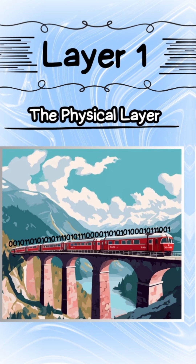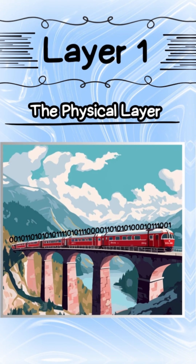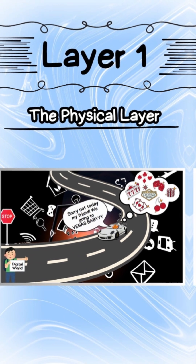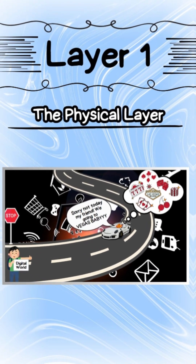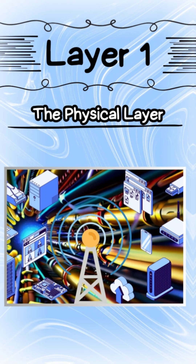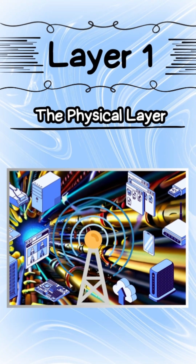Layer 1: The physical layer. Picture this — your data embarks on a grand road trip, but instead of hitting the open road, they are zipping through cables, fiber optics, and even radio waves. It's like a high-speed chase in a digital dimension.